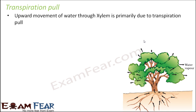Upward movement of water through xylem is primarily due to transpiration pull. Leaves are present at the top, and in presence of sunlight, the energy causes water to evaporate from the leaves. So there will be scarcity of water there, and the leaves will start to pull water from below. Water from lower leaves moves up, then from the stem, bark, and roots — creating an upward pull. This is known as transpiration pull.